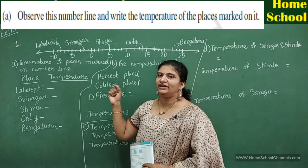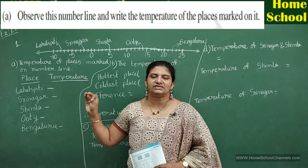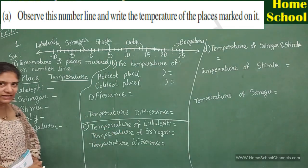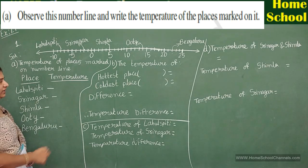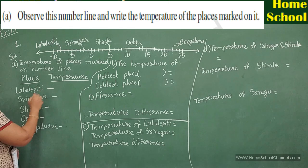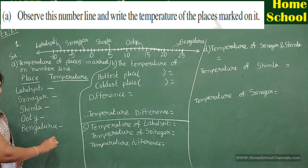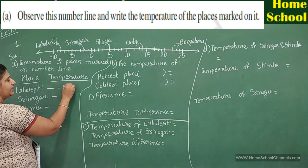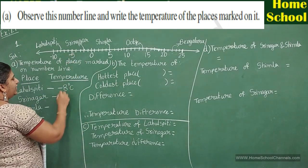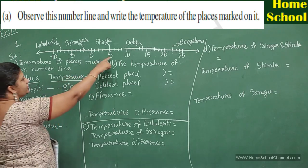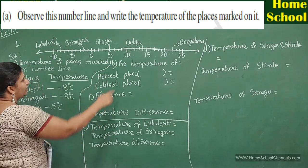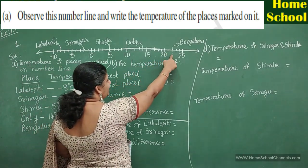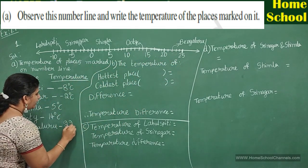We need to write the answer. I have already written some points on the board. Let us start the solution. Temperature of places marked on the number line — place and temperature: Lahul Spiti is minus 8 degrees Celsius, Srinagar is minus 2 degrees Celsius, Shimla is 5 degrees Celsius, Ooty is 14 degrees Celsius, and Bengaluru is 22 degrees Celsius.